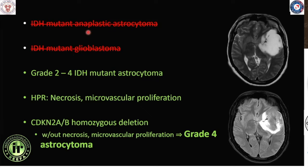As per the WHO 2021 classification, terminologies like anaplastic astrocytoma or IDH mutant glioblastoma no longer exist. These are WHO grade 2 to grade 4 neoplasms. Grade 4 IDH mutant astrocytoma would have areas of hemorrhage, necrosis, or irregular heterogeneous post-contrast enhancement. On MR spectroscopy at 3 Tesla or higher field strength, the presence of a 2-hydroxyglutarate peak at 2.25 parts per million suggests an IDH mutant astrocytoma.